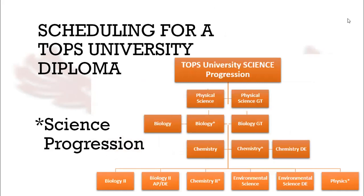Most students on the TOPS University diploma track take one science each year of high school. In 9th grade, most students take Physical Science. In 10th grade, students take Biology. TOPS University students then take Chemistry their junior year. Students will have the option to take Chemistry, Chemistry Asterisk, or Chemistry as a dual enrollment course.